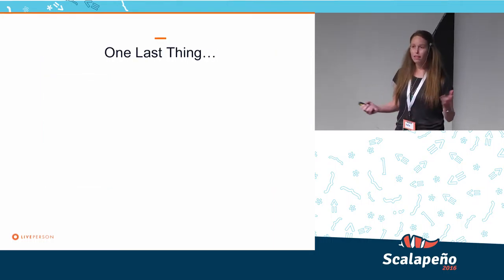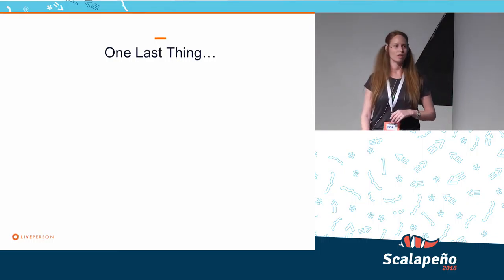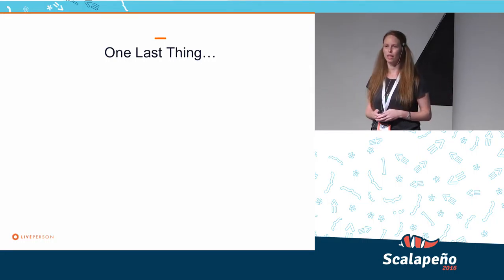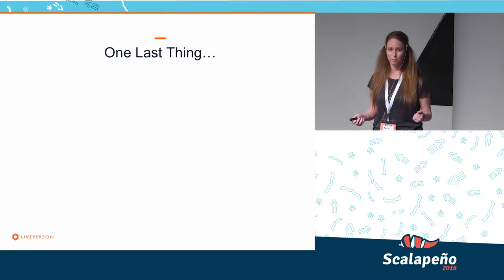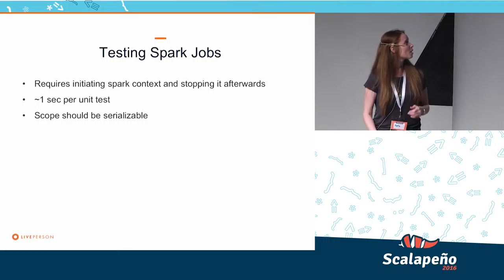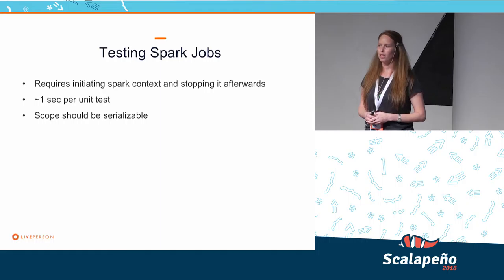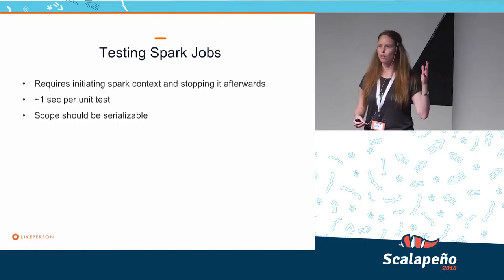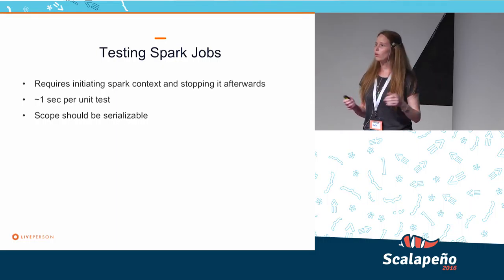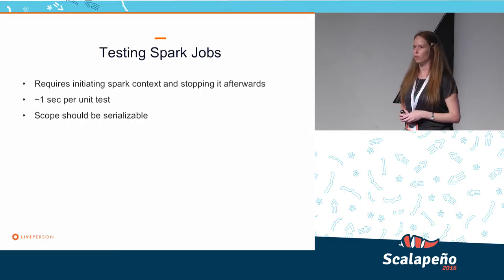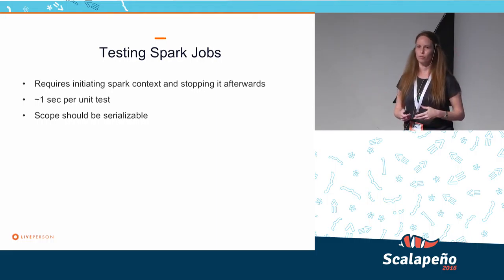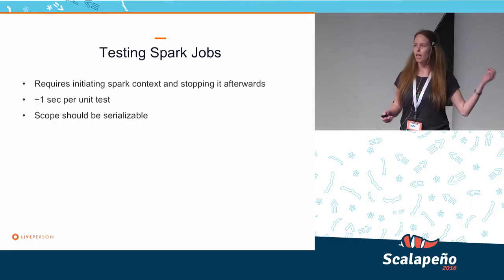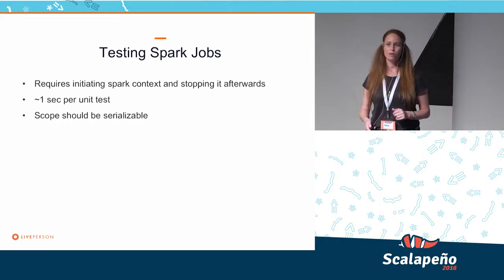One other thing I wanted to show is that we talked about running the same flow on Spark and MapReduce, and we have a solution for that. But we also run our flow in local mode when we do testing. Let's look at how testing looks in Spark: we initialize some Spark context and then run our job, but initializing the Spark context takes some time, so now our unit test takes about one second instead of a few milliseconds that smaller unit tests usually take. We also need to notice that the scope for the test should be serializable, because when you test with Spark, it serializes the task, so all your additional objects in the test should be serializable. My suggestion is that instead of testing with RDDs, you should test your flow using the container functionality.